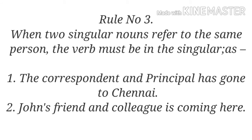Rule number three: when two singular nouns refer to the same person, the verb must be in the singular. As in 'The correspondent and principal has gone to Chennai.' Here, 'correspondent' and 'principal' refer to the same person, so the subject is singular and takes the singular verb 'has'. Similarly, 'John's friend and colleague is coming here' — the friend is also the colleague, so both words refer to the same person, making it a singular subject requiring the singular verb 'is'.